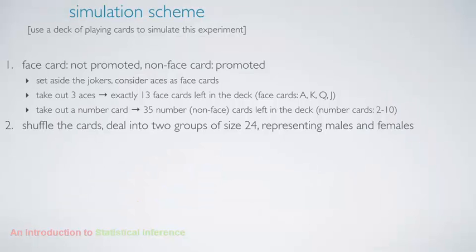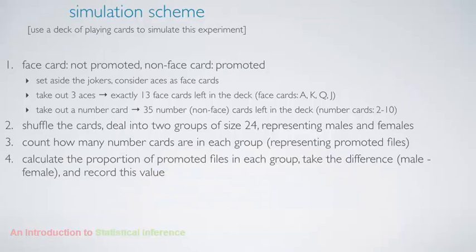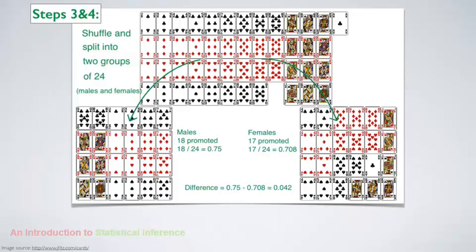Then we shuffle the cards and deal them into two groups of size 24, representing males and females. Note that random shuffling is what simulates this idea of leaving things up to chance. Next, we count how many number cards are in each group, which represent the promoted files, and we calculate the proportion of promoted files in each group, and take the difference between the proportions of males and females promoted, just like we did with the original data.